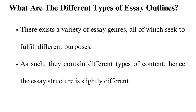What are the different types of essay outlines? There exists a variety of essay genres, all of which seek to fulfill different purposes. As such, they contain different types of content, hence the essay structure is slightly different. They include argumentative essays, narrative essays, descriptive essays, and expository essays. Below is an outline of each, based on the content each offers.